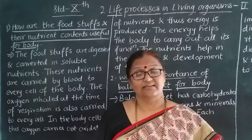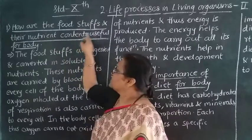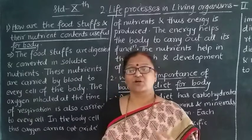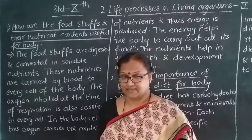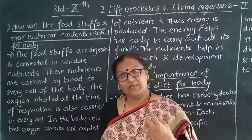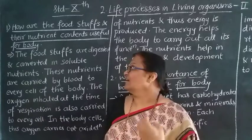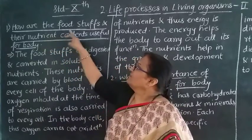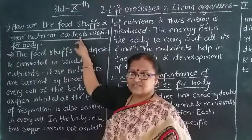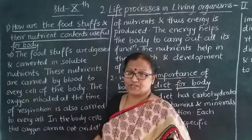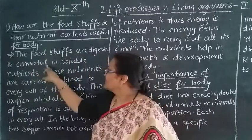The first question is: How are the foodstuffs and their nutrient contents useful for our body? In digestion, we convert complex food material into a simpler form with the help of enzymes. The foodstuffs and nutrients we take inside are digested and converted into soluble nutrients.